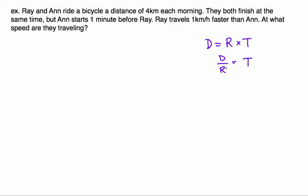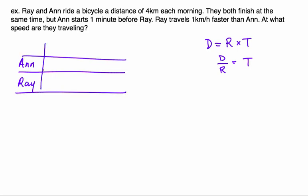We're going to need to think about the DRT formula when solving this, but let's define our variables. In this case I'm going to define them with a chart. We've got two people, Ann and Ray, and we know we're dealing with distance, rate, and time, so let's start to put some variables in. First, the distance for both of them is 4. There's no difference with that. Ann goes a distance of 4 and so does Ray.